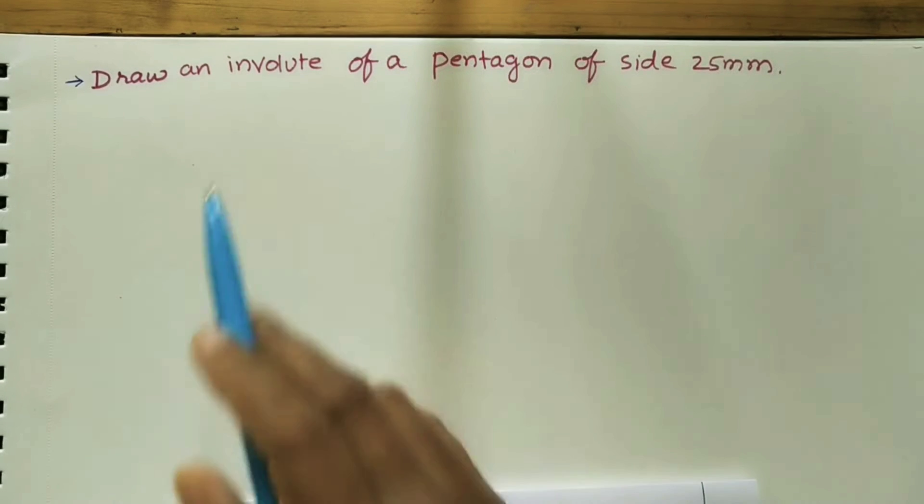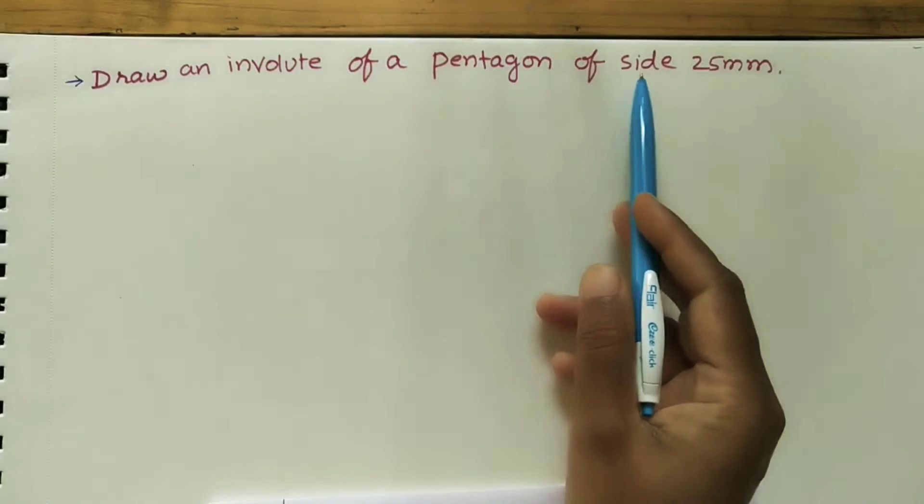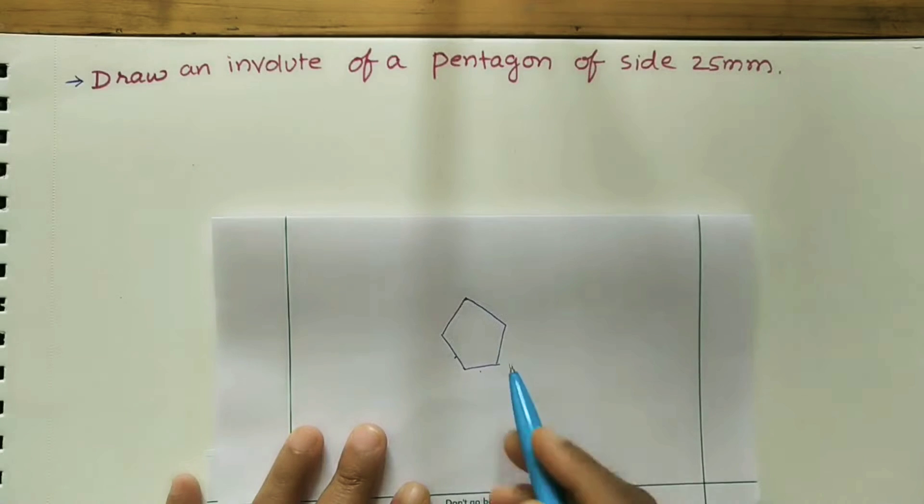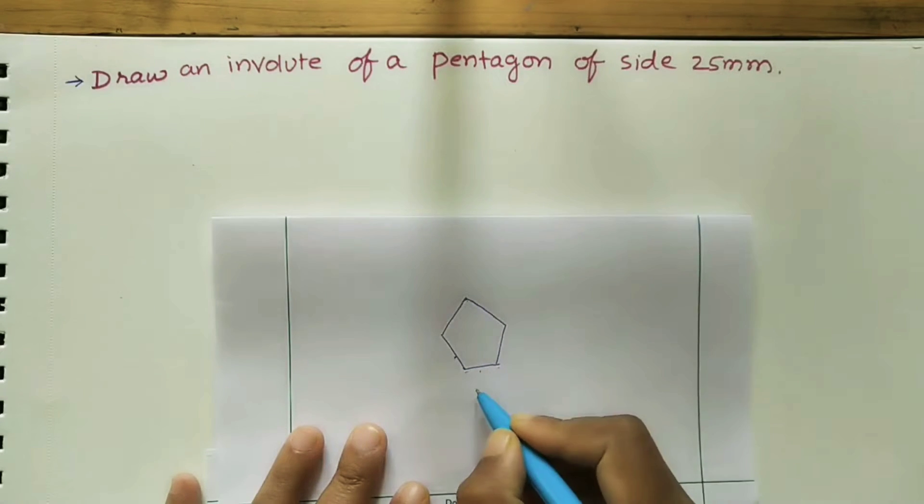Hi friends, welcome to my channel. Today we will discuss how to draw an involute of a pentagon. Draw an involute of a pentagon of side 25mm. This is the given question. Pentagon means it has five sides, so we are using a regular pentagon here. All sides have equal length of 25mm.